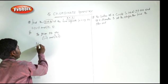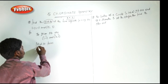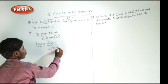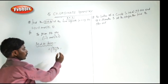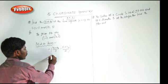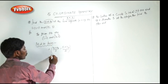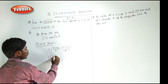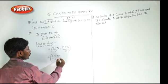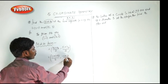Now the midpoint formula: midpoint = (x1 + x2) / 2, (y1 + y2) / 2. We substitute the values: x1 is 1, plus x2 is -5, divided by 2, comma y1 is -1, plus y2 is 3, divided by 2.